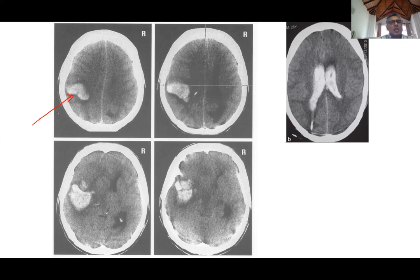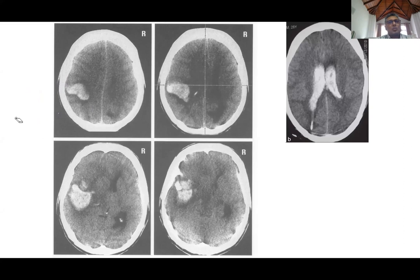Fresh blood is radio-opaque and appears white like bone on CT. Old blood — if the clot has been there for several weeks or months — appears darker, more like brain tissue than bone. So if there is old bleeding, unless you are very careful, you can get confused between brain substance and the blood clot. With fresh bleeding, the moment you look at it, you immediately recognize it as acute bleeding.